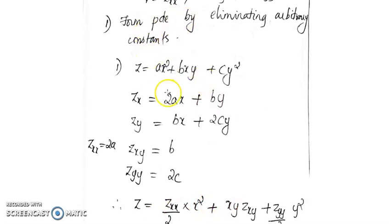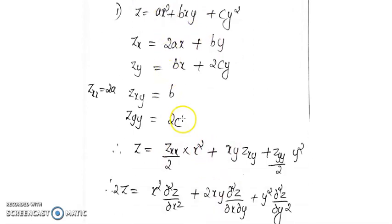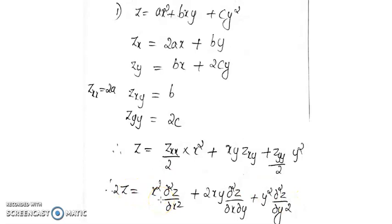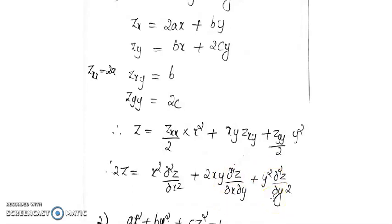Substituting for a, b, and c, the required PDE is: z = (x²/2)·(∂²z/∂x²) + xy·(∂²z/∂x∂y) + (y²/2)·(∂²z/∂y²). That is, 2z = Rx² + 2xyS + y²T.